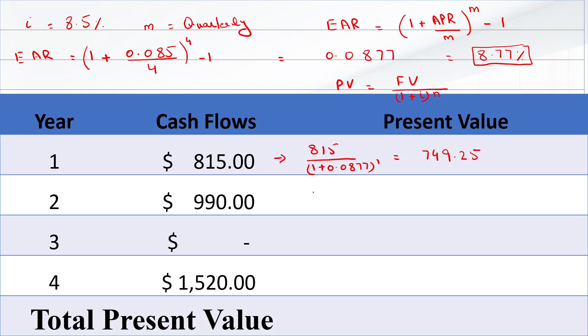For Year 2, it will be 990 divided by 1 plus 0.0877 raised to power 2, which equals $836.72.